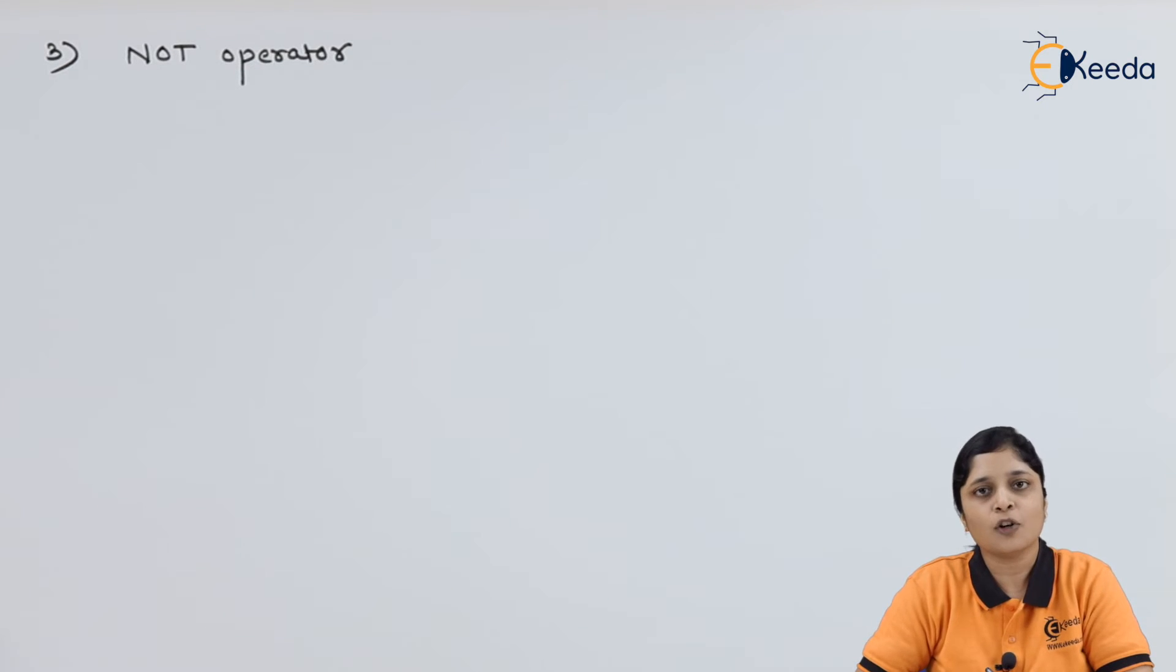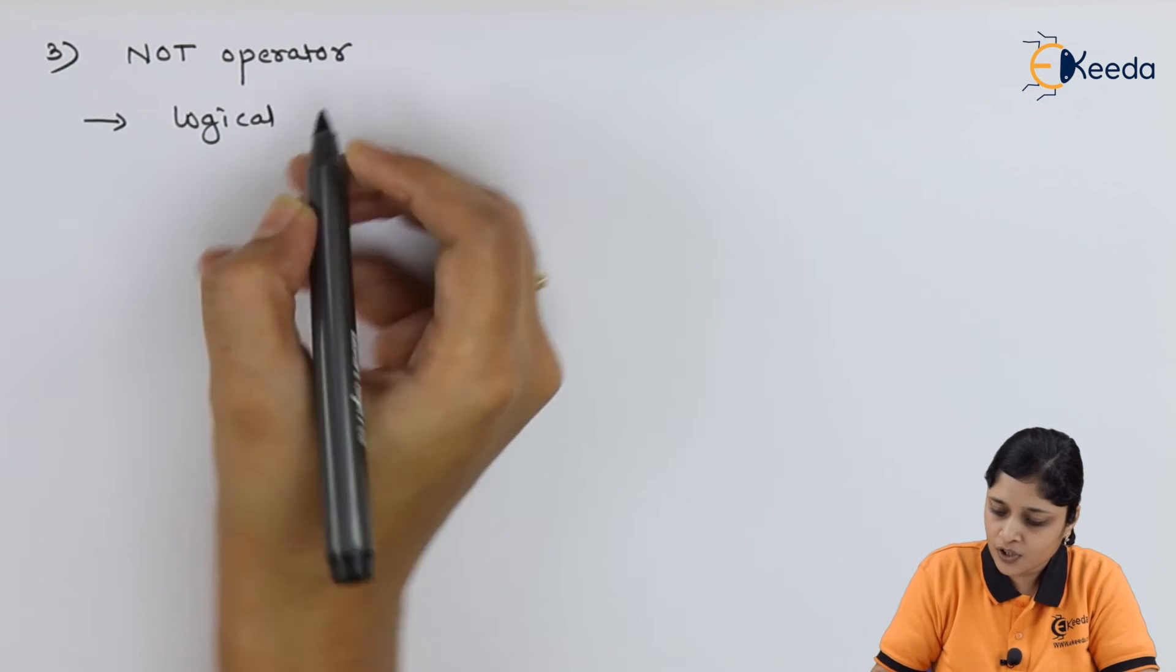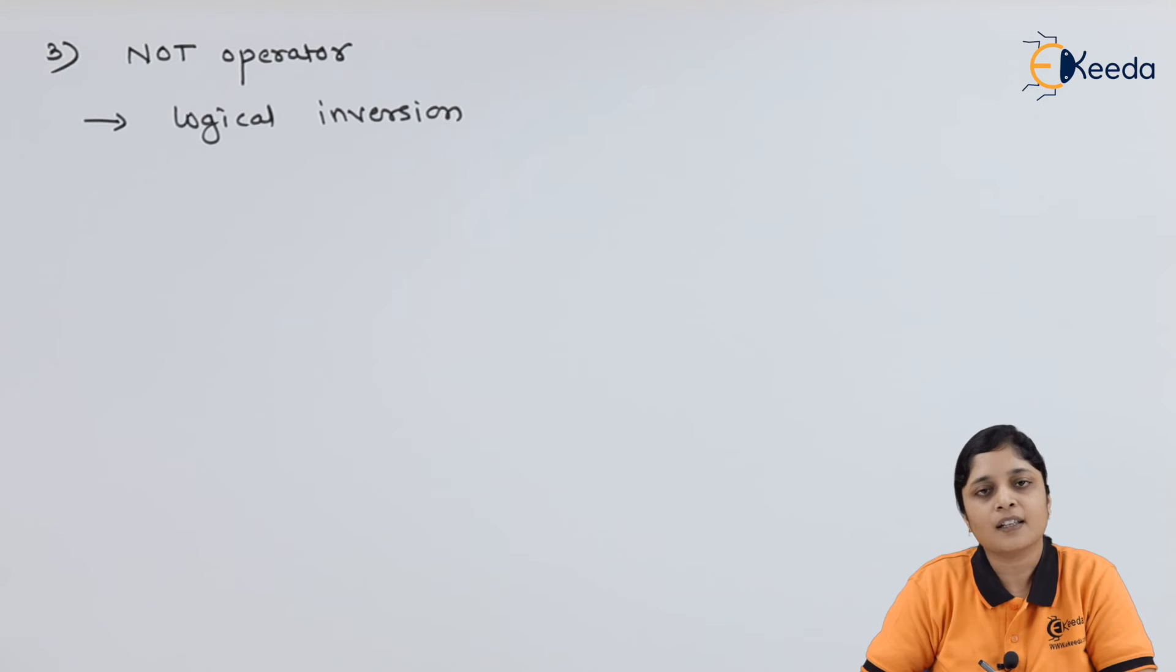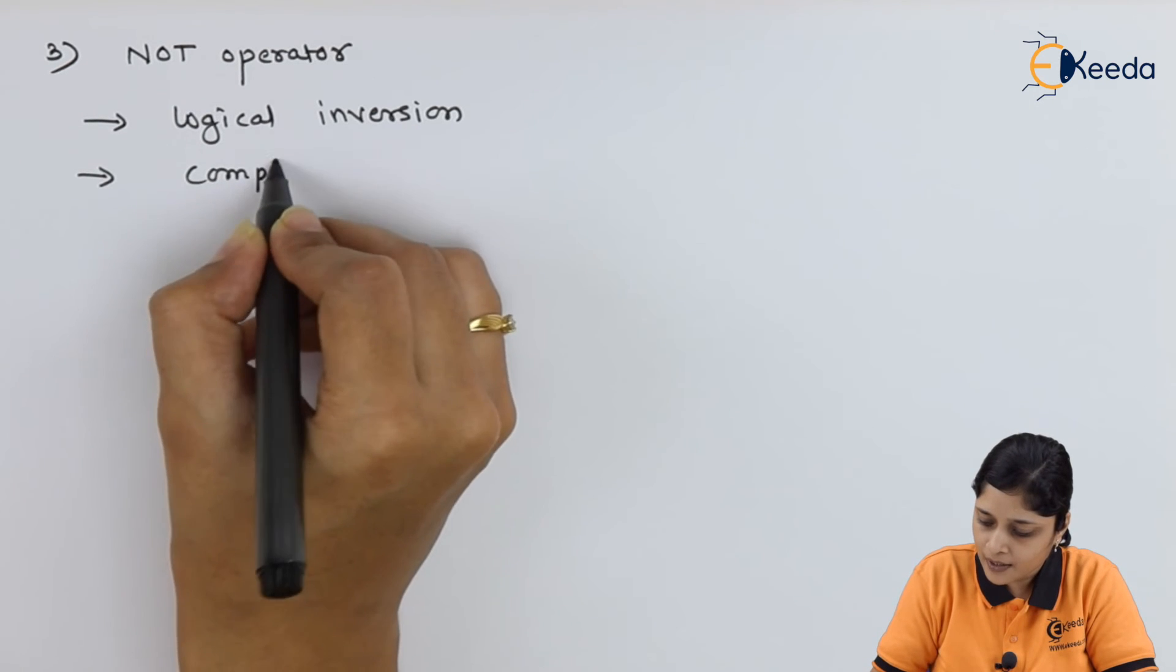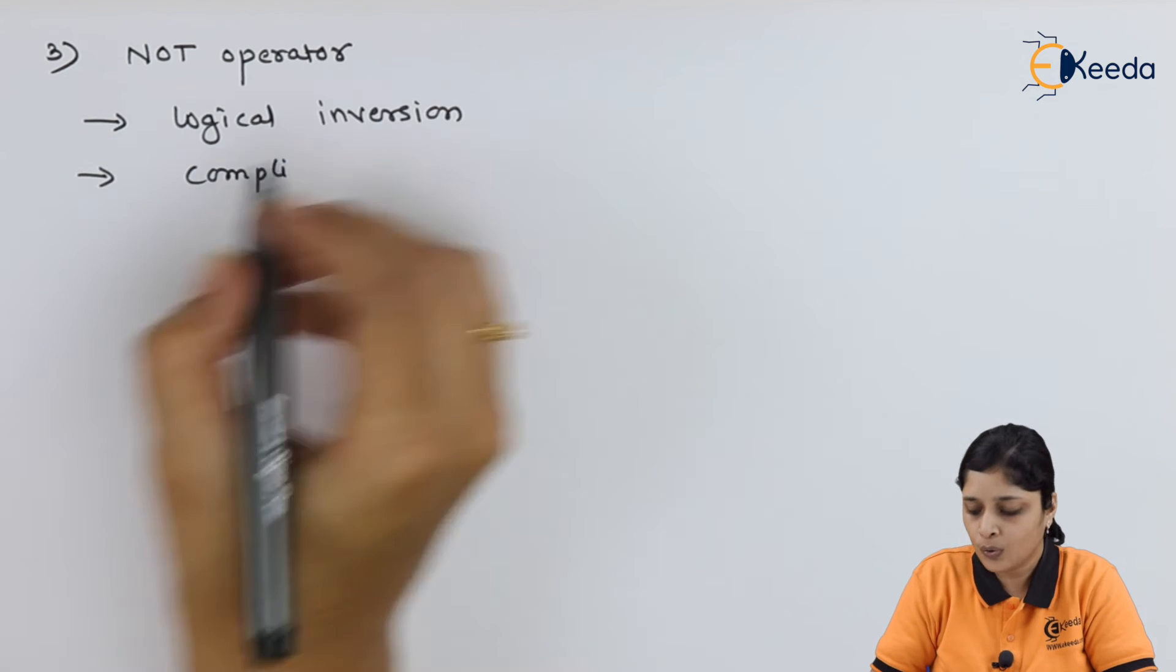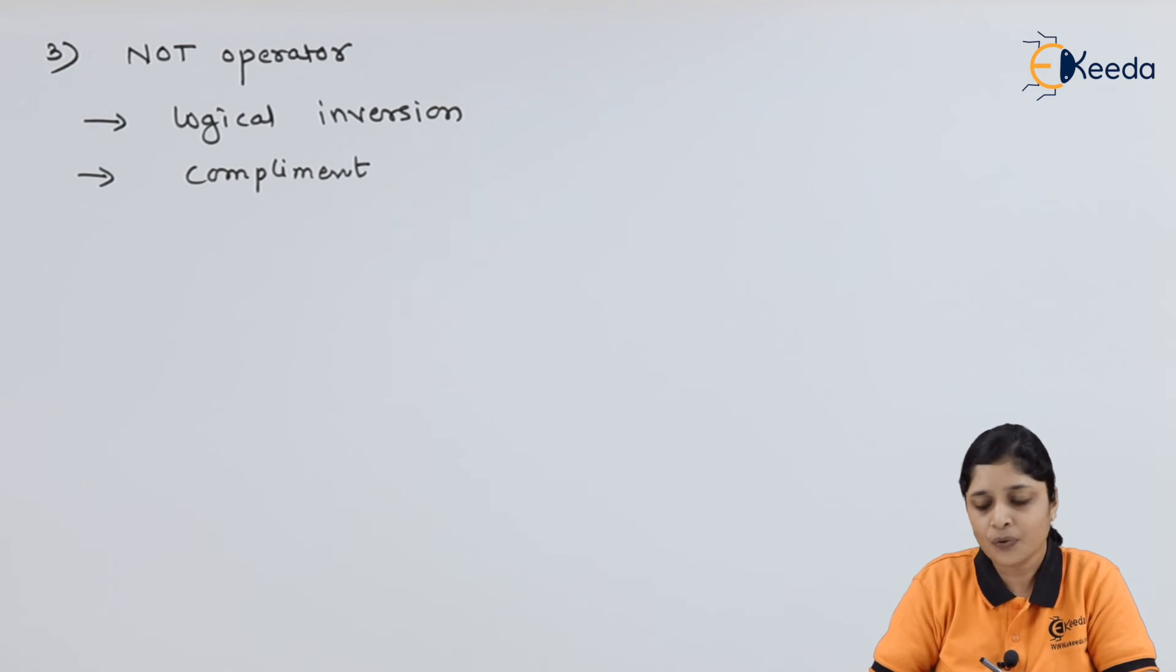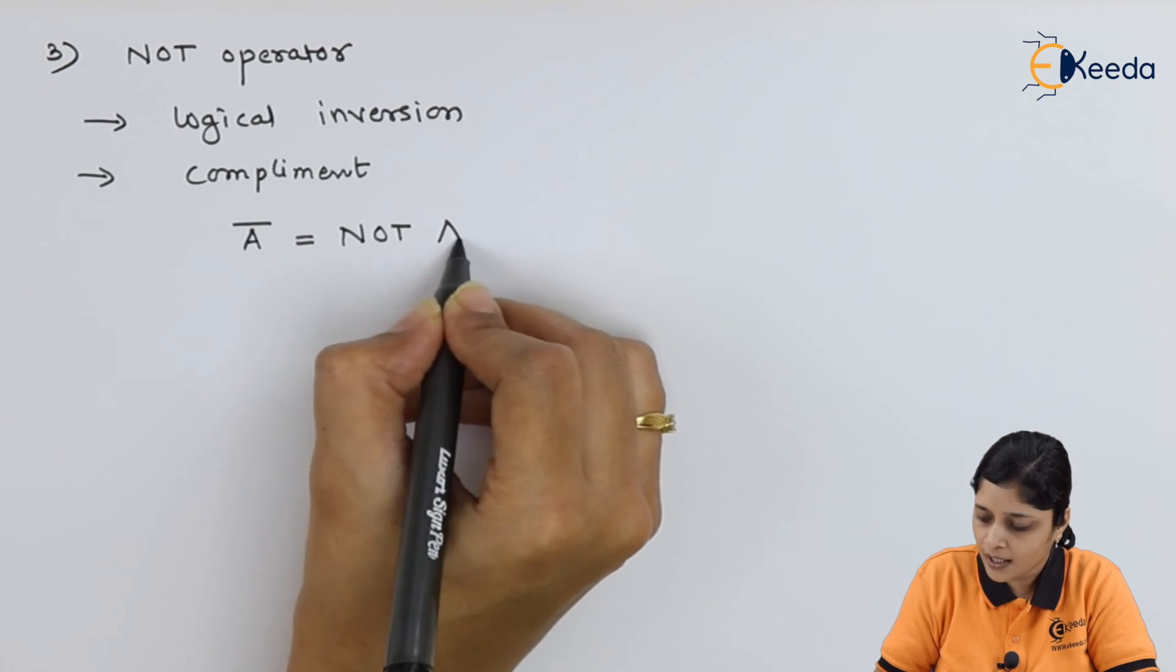Now, the third operator is NOT operator. NOT operator performs logical inversion, or you can say the complement of the inputs present on the input side. It will complement high to low and low to high. If you have A bar, it will be written as NOT A.